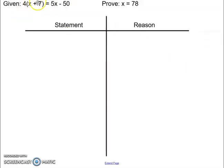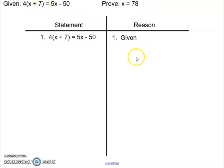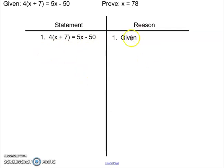Right here is what we're given. We're given this equation and I want to prove that x equals 78. So we're going to start with what it's giving us — we're going to start with the equation because the reason for it is 'given.' The conclusion I'm going to draw is that this equation is true. How do I know this equation is true? Because I was told it was true.